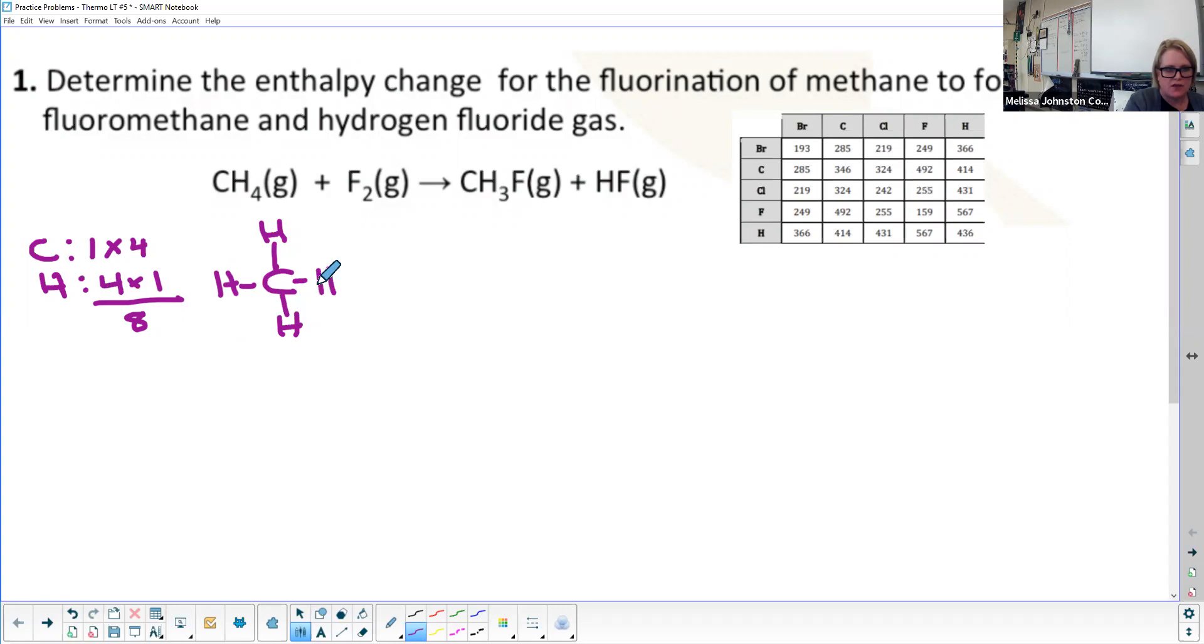So there's my methane, plus fluorine here. Fluorine is going to have a total of 14 electrons.